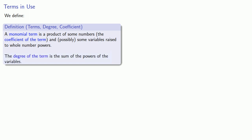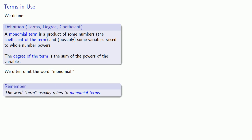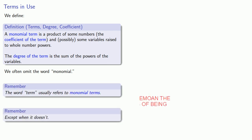The degree of the term is the sum of the powers of the variables. Now in a perfect universe, we would always speak exactly, and we would never speak using bad English. Unfortunately, we don't live in that universe. We often omit the word monomial and just talk about the terms of an expression. So it's useful to remember, the word term usually refers to monomial terms, except when it doesn't.